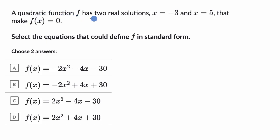We're told a quadratic function f has two real solutions, x equals negative three and x equals five, that make f of x equals zero. Select the equations that could define f in standard form.